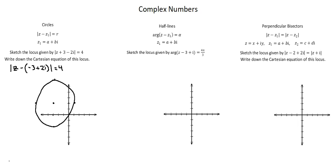The second requirement, write down the Cartesian equation of this locus. The Cartesian equation of a circle with center negative 3, 2 and radius of 4 is x plus 3 squared plus y minus 2 squared equals the square of 4, which is 16.